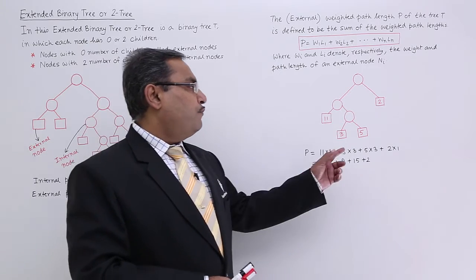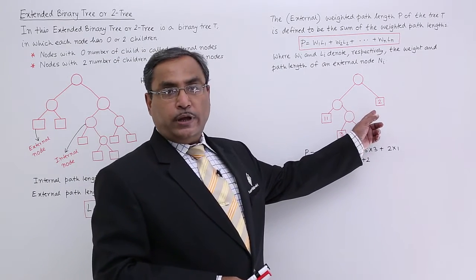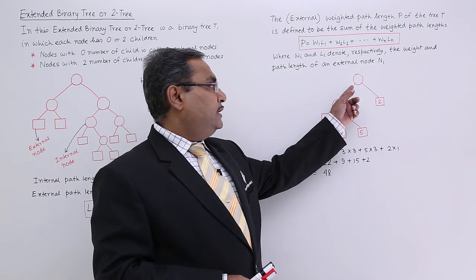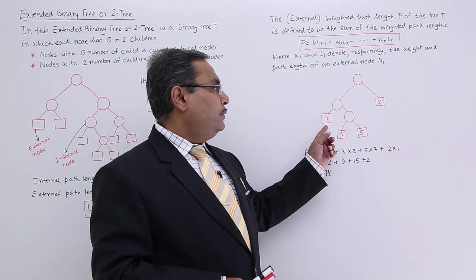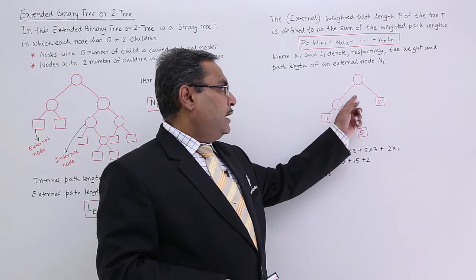What is this? Where WI and LI denote respectively the weight and the path length of an external node. Let us go for this example. So these are the weightages that are given.